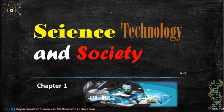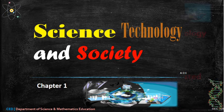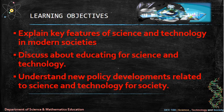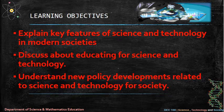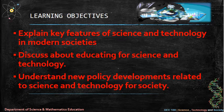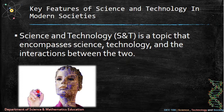Science, Technology and Society. Learning objectives: one, explain key features of science and technology in modern societies; two, discuss educating for science and technology; three, understand new policy developments related to science and technology for society.